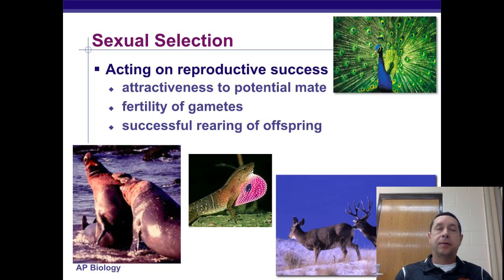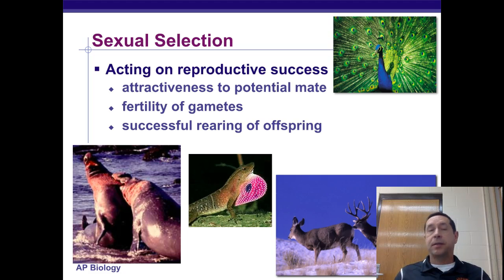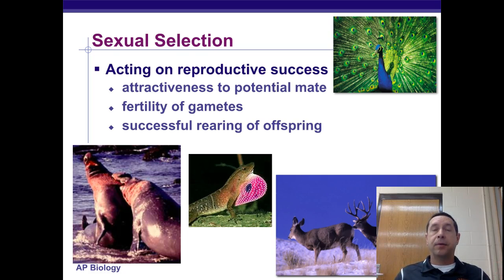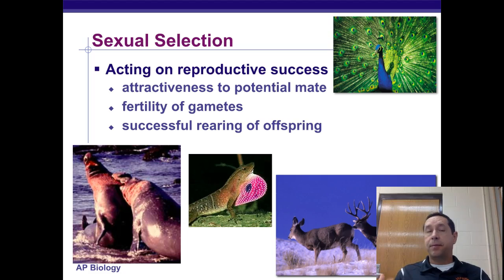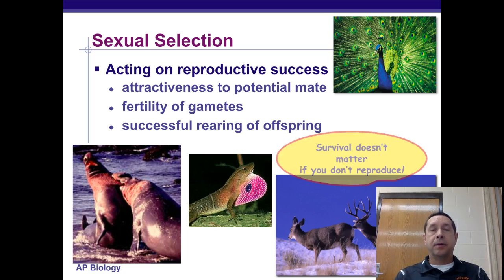Sexual selection works with reproductive success. Being able to attract a mate allows more successful reproduction. This also involves the fertility of the gametes — how likely they are to be fertilized and grow to maturity — as well as successfully rearing offspring, not just giving birth but helping them survive the adolescent stage into adulthood.